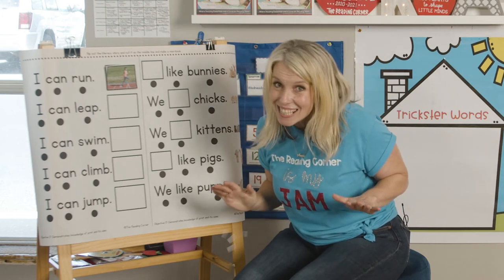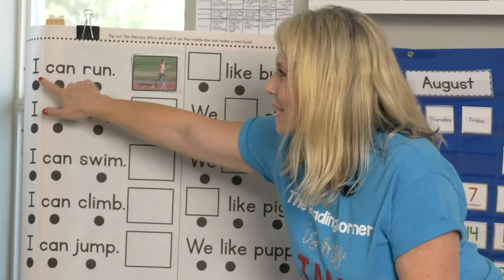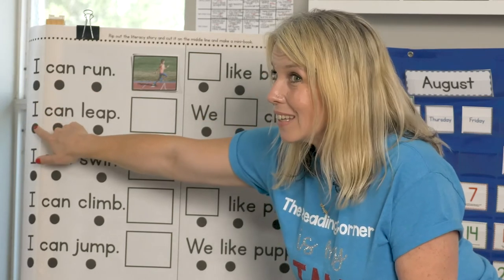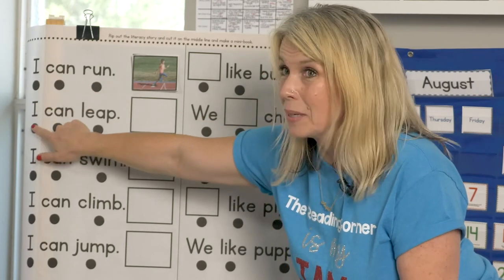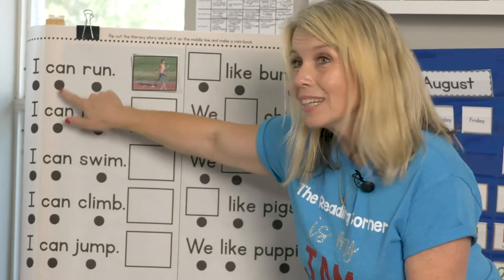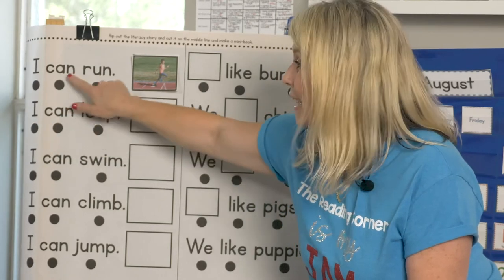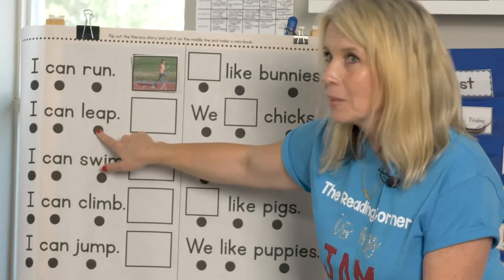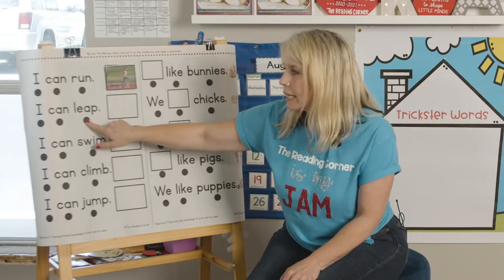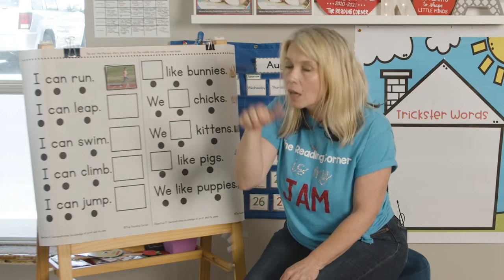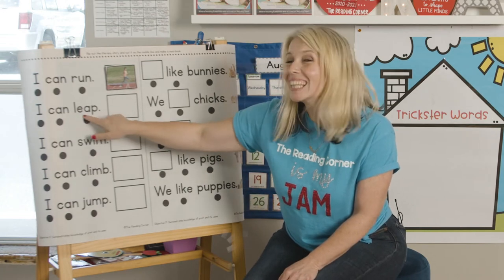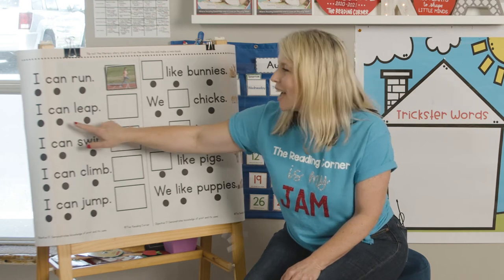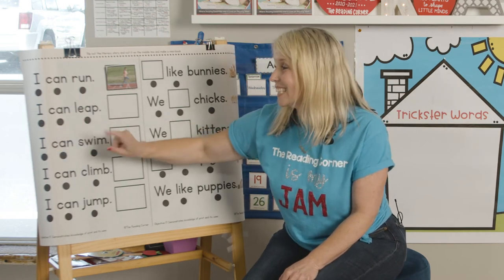Are you ready for the second sentence? You'll notice that I is down here again, so you already know how to say this one. I — there's the same sight word — can. What does this say? It starts with a... leap. Did you say leap? Good for you. Kiss your brain. I can leap.